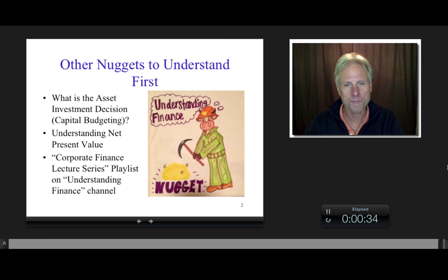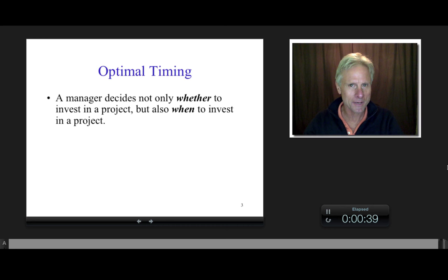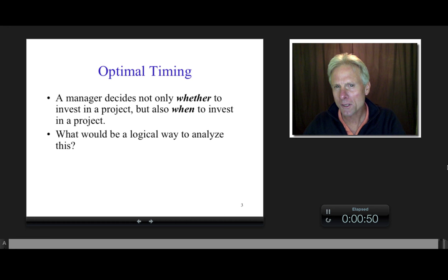Anyway, bottom line is that the company not only decides whether to build this new factory or not, but also what is the optimal time to build this new factory. So what do you think a logical way would be to analyze this? Well, what's been sort of a bottom line analysis, at least with respect to what we quantify, regarding the asset investment decision? Net present value, right?